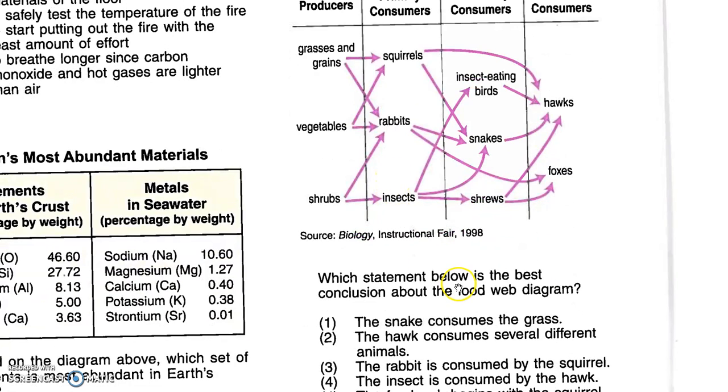Which statement below is the best conclusion about the food web diagram? The snake consumes the grass. Let's have a look. The snake is here. It consumes squirrels, rabbits, insects. No grass. The hog consumes several different animals. Well, squirrels, insect-eating birds, snakes, shrews. So definitely a couple of different animals.